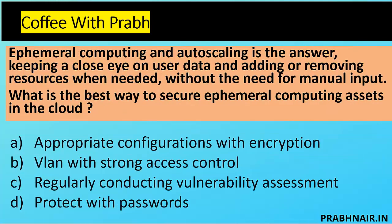Next coffee shot: Ephemeral computing and auto-scaling involves keeping a close eye on user demand and adding or removing resources when needed without manual input — it can be done automatically in the backend. What is the best way to secure ephemeral computing assets in the cloud? Ephemeral computing creates resources on demand and you can destroy them easily when not needed. This also leads to configuration issues because we're creating multiple instances and it's difficult to track which have been deleted.